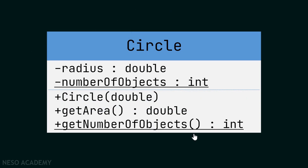Now let's see this example. When we are given a class diagram we should be able to understand it. First of all we have a class called Circle. It has two attributes and three methods. The minus sign indicates a private attribute. So we have a private attribute called radius of type double, and another private attribute called numberOfObjects of type integer. This one is underlined, which means it is a static attribute.